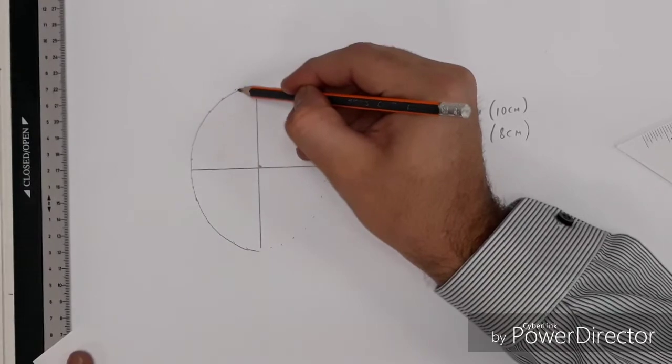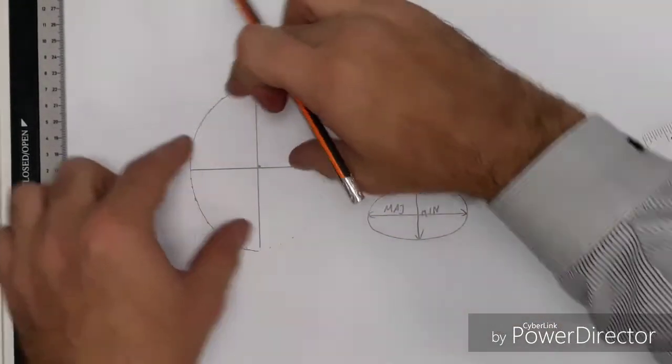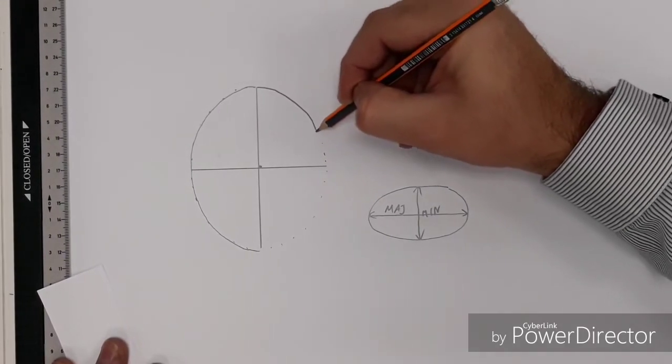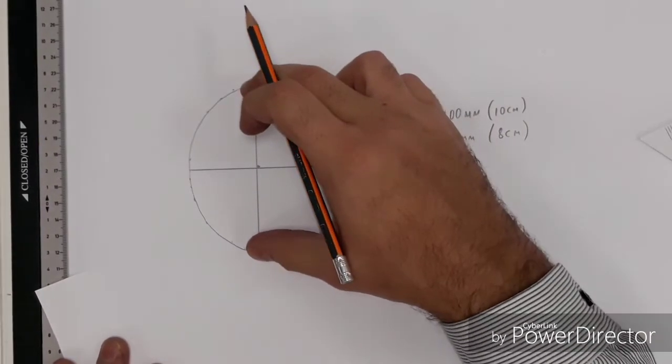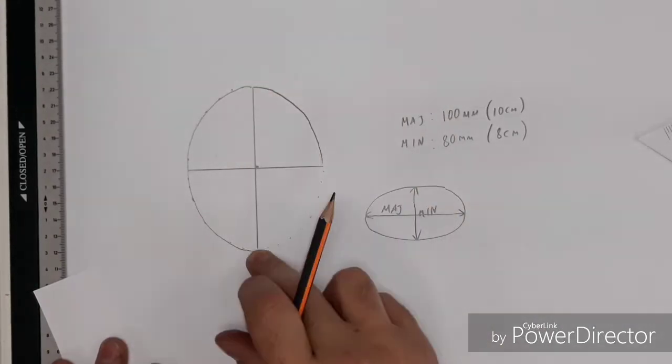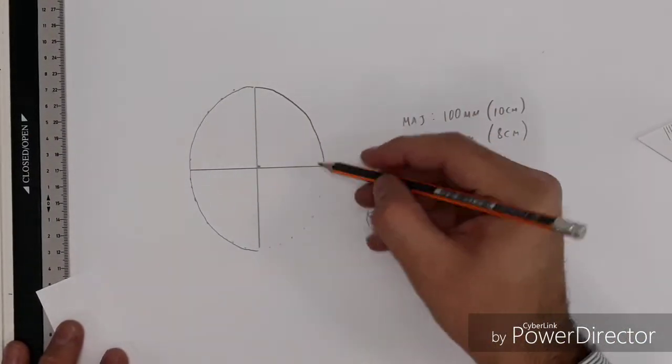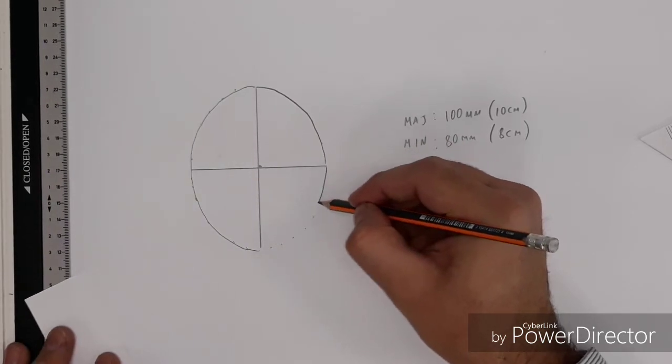Now, some of you may be asking yourselves, what happens if it needs to be the other way around and rotated? Well, the process is identical. The only thing that changes, rather than drawing the major axis first and vertically, we swap the two around. So we do the major axis this way and the minor axis this way, and the process is exactly the same.